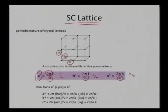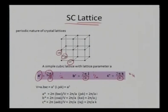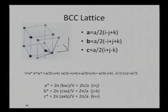Finally, I get a* = (2π/a)·i, b* = (2π/a)·j, and c* = (2π/a)·k. Now coming to the BCC lattice — a is my lattice constant for a cubic lattice and a, b, c are the new axes that form the new crystal.